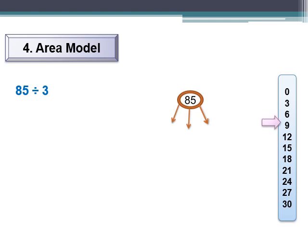8 falls between 6 and 9 in the multiples of 3. So I will take the smaller one — smaller than 8 — which is 6. But I don't write 6; I write 60. Why 60? Because 8 is in the tens place, so it represents 80, and the nearest multiple of 3 below it is 60.